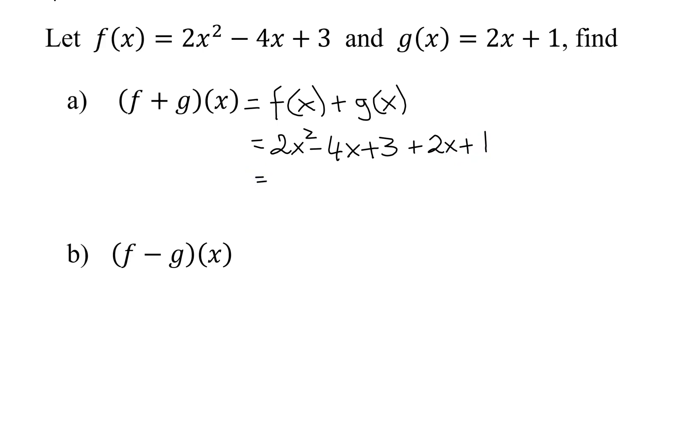So now all I have to do is simplify. Are there any like terms that go with 2x squared? No, so I'm going to have 2x squared. Now we're looking for like terms. Is the one that goes with negative 4x? Yes, plus 2x. Negative 4x plus 2x is negative 2x. And lastly, my constants. I have plus 3 and a plus 1, so I'm going to get plus 4.